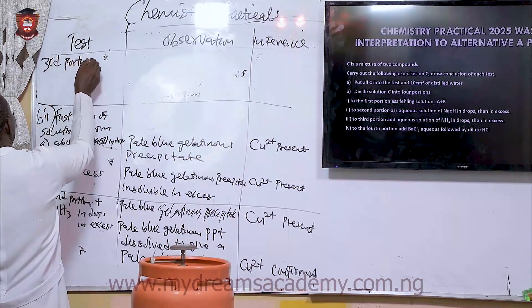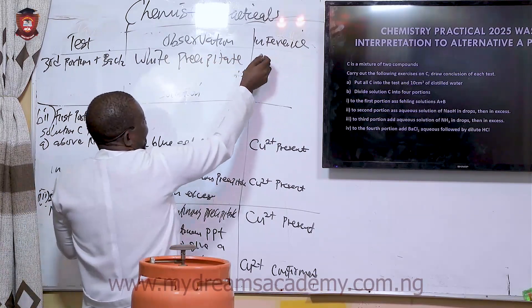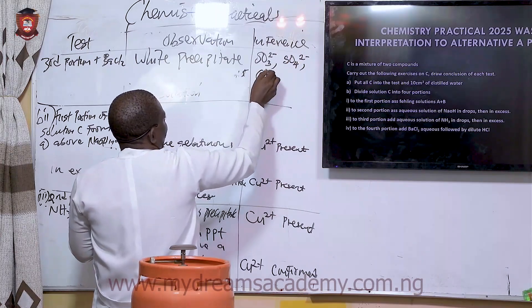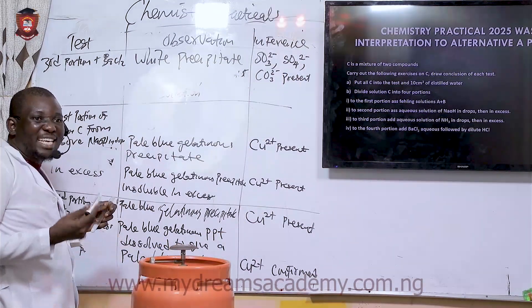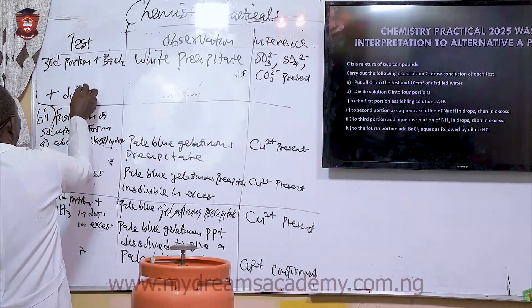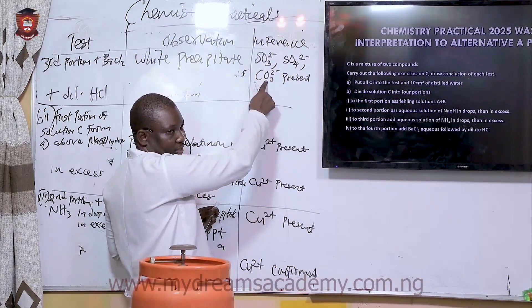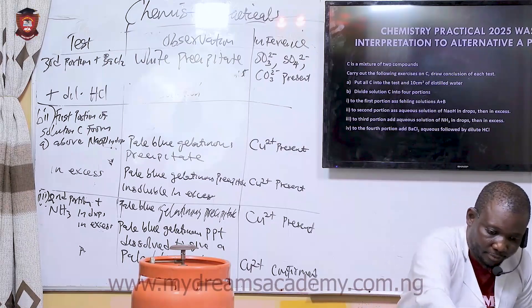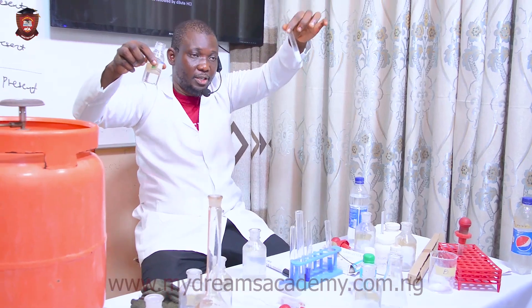Third portion plus BaCl₂ gives a white precipitate. There are several anions you could suspect: sulfates, carbonates. To distinguish between them, add dilute HCl. If it is carbonate or sulfite, the precipitate will dissolve. If it remains, it is insoluble — which would confirm sulfate. Let's add HCl now.